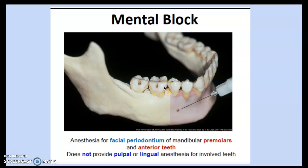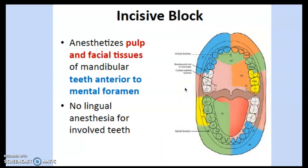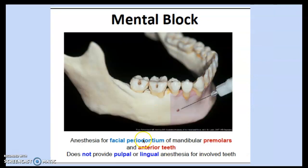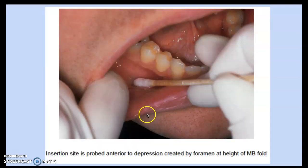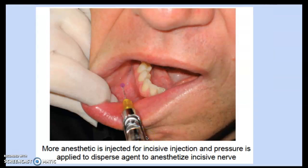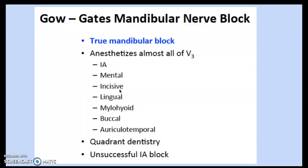The mental block provides anesthesia for the facial periodontium of the mandibular premolars and anterior teeth but does not provide pulpal or lingual anesthesia. The incisive block extends mental block coverage by also anesthetizing the pulp and facial tissues of teeth anterior to the mental foramen, but still no lingual anesthesia. The target for both is anterior to the mental foramen, usually between the first and second premolars. More anesthetic is injected for the incisive block, with pressure applied to disperse it toward the incisive nerve.